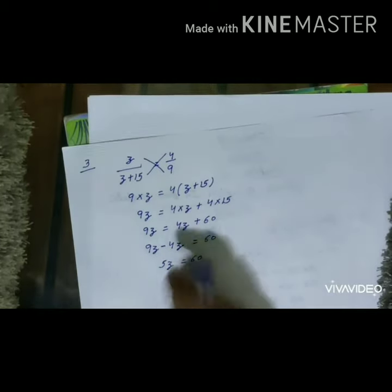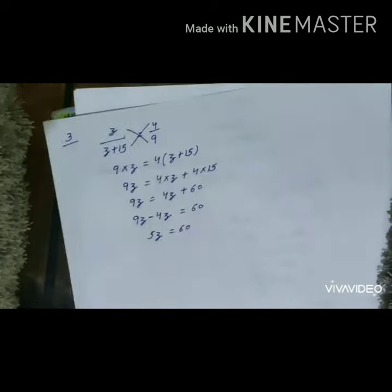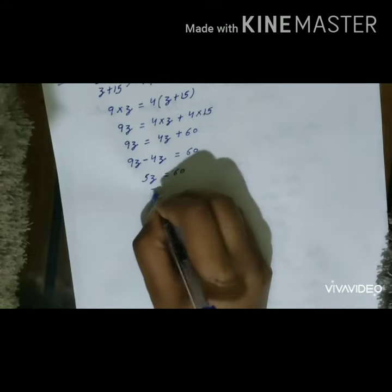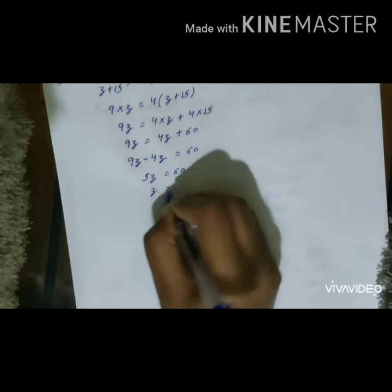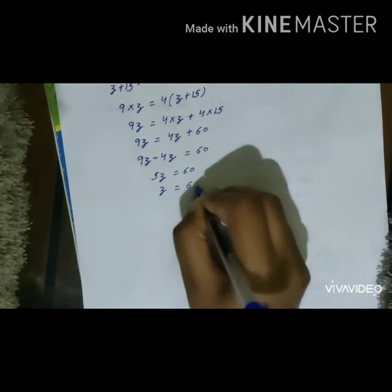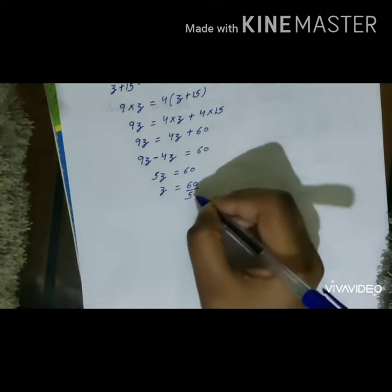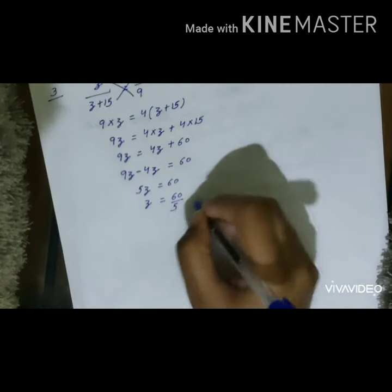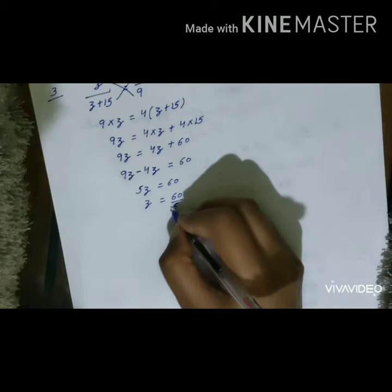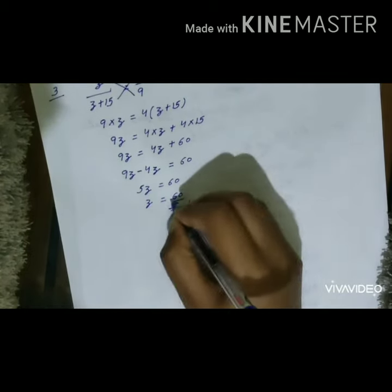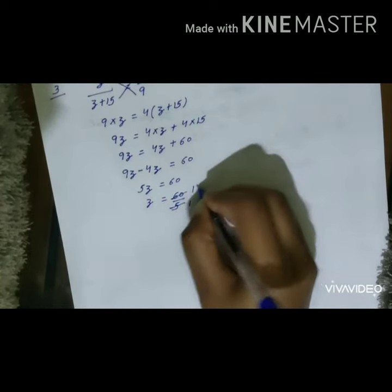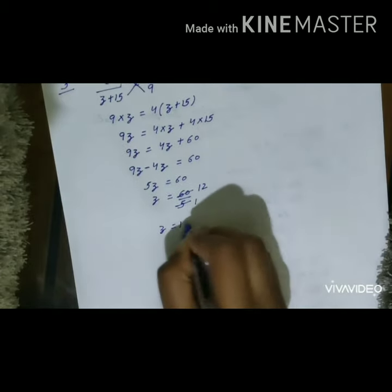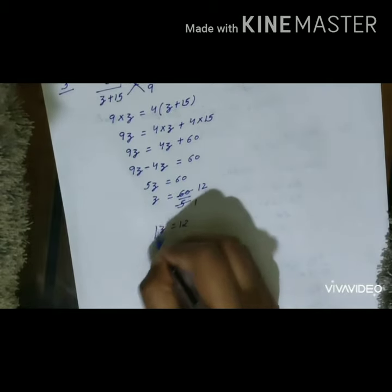Now we will transpose 5 to RHS. After transposing, we will get z = 60 / 5. It is not in simplest form, so we need to reduce it. 5 goes into 60 twelve times and 5 goes into 5 once. So z = 12.